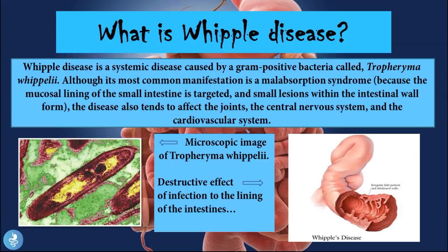In the picture on the left you can see the microscopic image of Tropheryma whipplei, and on the right you can see the destructive effect of the infection on the lining of the intestines. What this bacteria actually does is when it comes into contact with the human body, it tends to infiltrate certain parts of the body and cause damage where it infiltrates. Most of the time the small intestine is targeted, and because it causes mucosal inflammation and lesions within the small intestine, the patient suffers from a malabsorption syndrome.